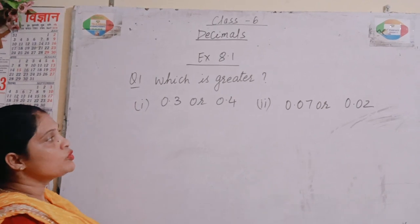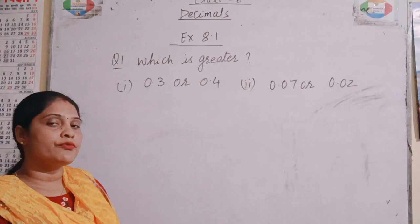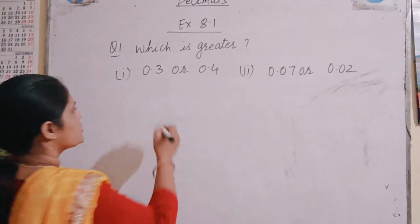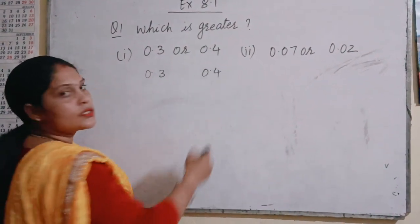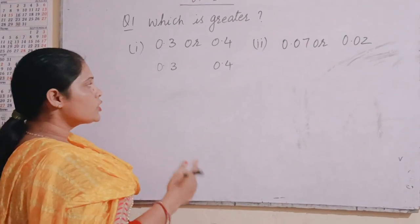First one is 0.3 or 0.4. So we know how to convert the decimal into the fraction. First we will convert into fractions. 0.3 is written here and 0.4 is written here. So we know how to convert into fractions. If you do not know, let me explain.